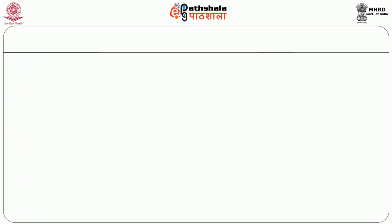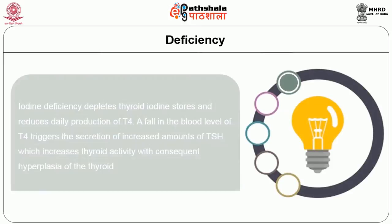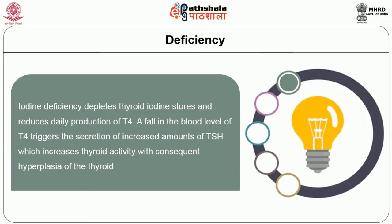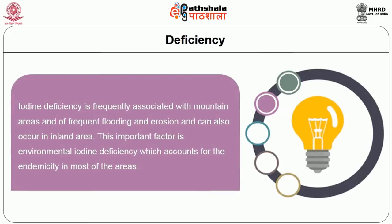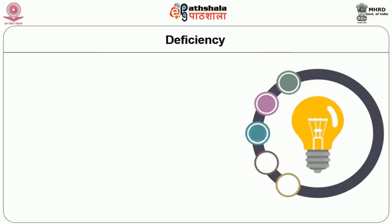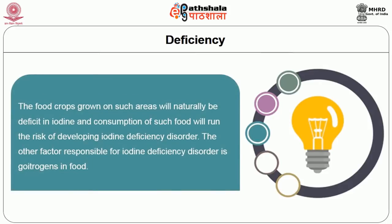Let us learn about iodine deficiency disorders. Iodine deficiency depletes thyroid iodine stores and reduces daily production of T4. A fall in the blood level of T4 triggers the secretion of increased amounts of TSH, which increases thyroid activity with consequent hyperplasia of the thyroid. Iodine deficiency is frequently associated with mountain areas with frequent flooding and erosion, and can also occur in inland areas. Environmental iodine deficiency accounts for the endemicity in most areas, and food crops grown in such areas will naturally be deficient in iodine.